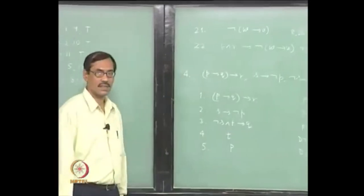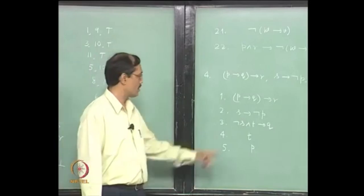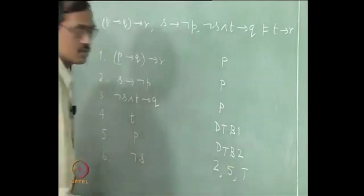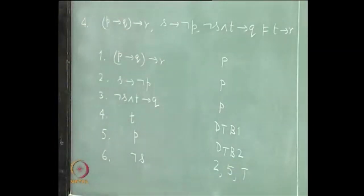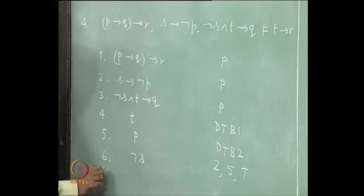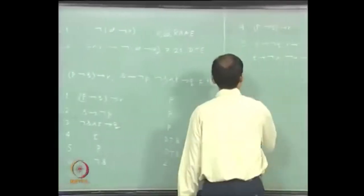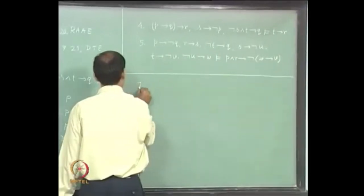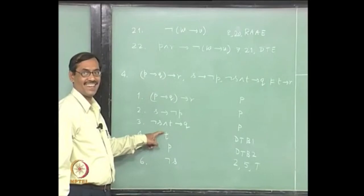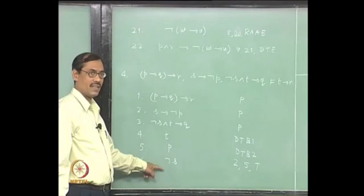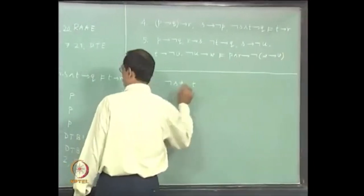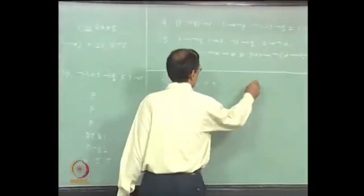Now once we assume P, what should we do next? We can use this. So line 6 gives not-S, because line 2, line 5, modus ponens. So we have not-S, we have T. We will write here. The seventh line gives us not-S and T first, then Q directly. So that is again introduction. If you have a premise as x and a premise as y, then you can infer x and y. That is introduction of and. So we go for not-S and T, inferred from lines 4 and 6 by law of introduction.